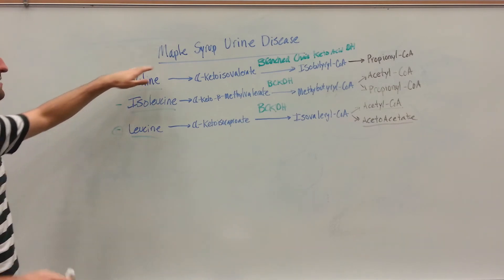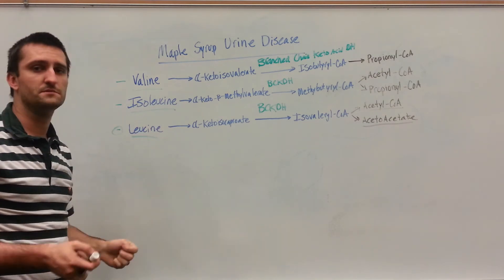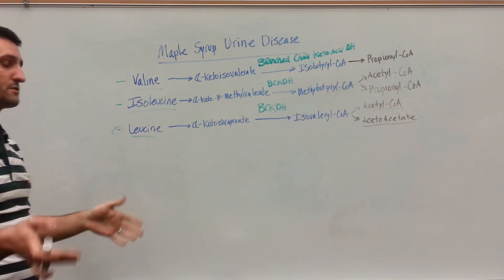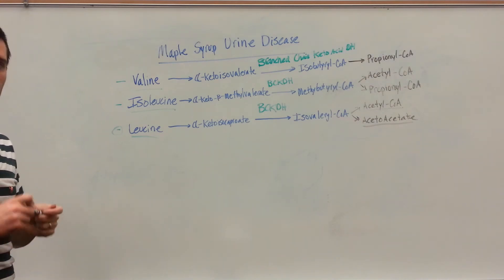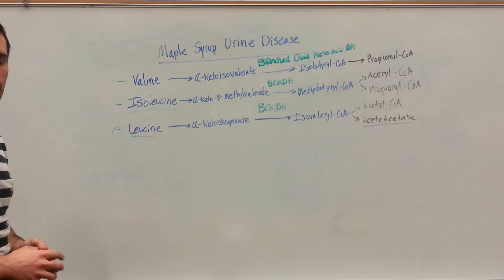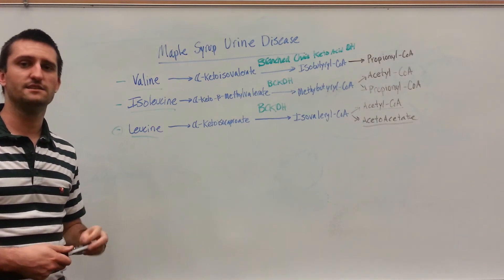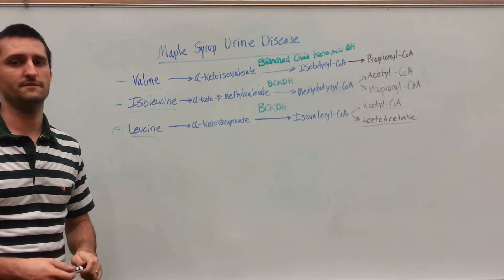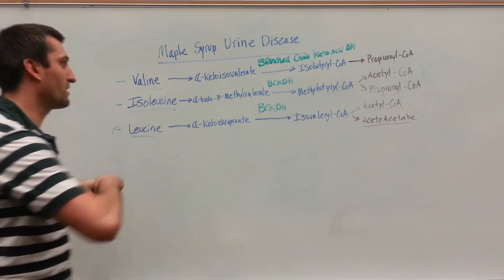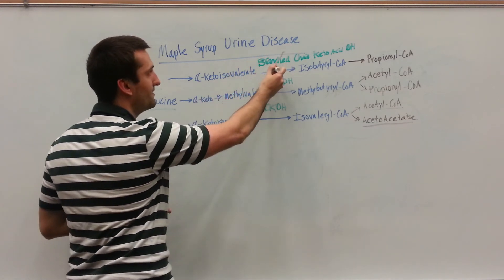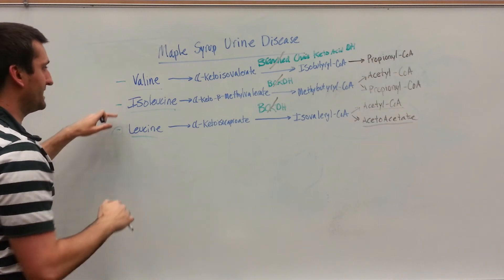If you have maple syrup urine disease, as you could suspect, one of the symptoms is going to be a maple syrup odor to your urine — a sweeter urine smell. You're also going to get CNS problems, such as mental retardation and possibly even death. This is the basics of maple syrup urine disease: you knock out this enzyme and get a buildup of valine, isoleucine, and leucine.